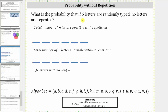What is the probability that if six letters are randomly typed, no letters are repeated? To determine this probability, we need to determine the number of six-letter sequences possible without repetition and divide by the total number of six-letter sequences possible with repetition.